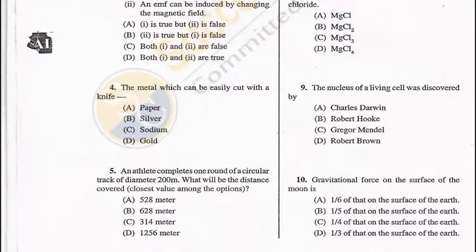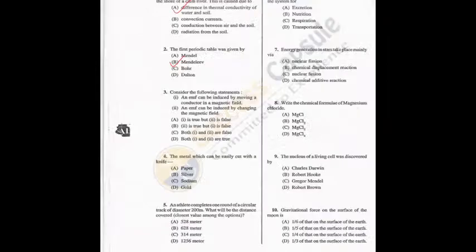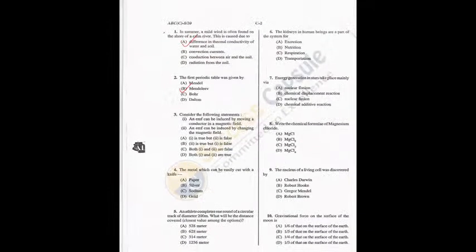Question 5: An athlete completes one round of a circular track of diameter 200 meters. The radius will be 100 meters and the circumference will be 2πr = 2 × (22/7) × 100 = 628 meters. So B is the answer.